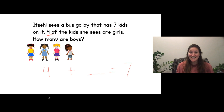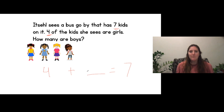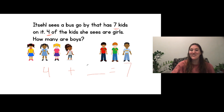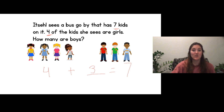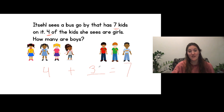Okay so for Itzel seeing the bus go by that had seven kids on it — she knew that there were four that were girls. How many were boys? You should have had three boys on the bus. So there were four girls plus three boys equals seven altogether. You can count one, two, three, four, five, six, seven. So we know that our answer is correct. There were three boys because this equals seven altogether.